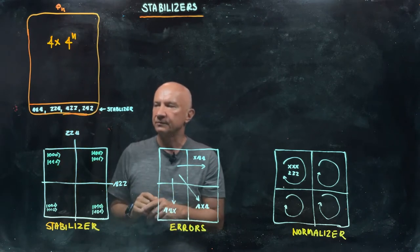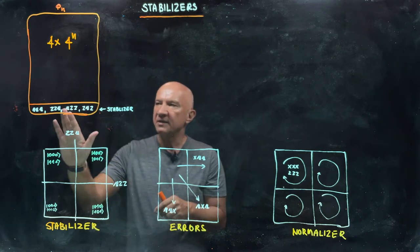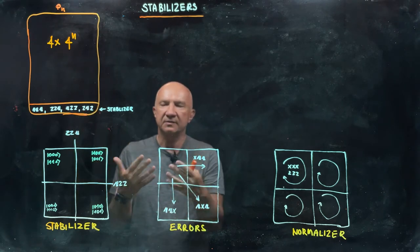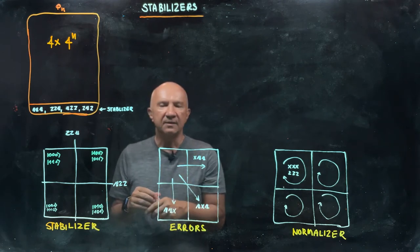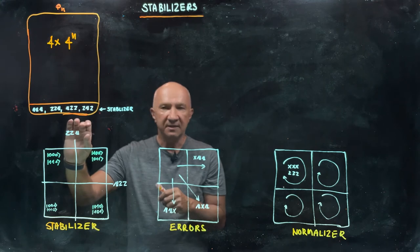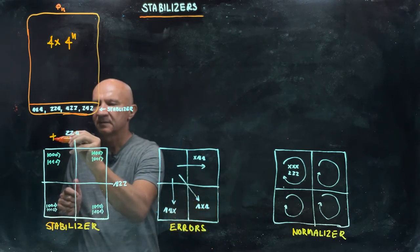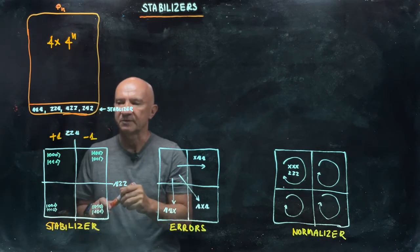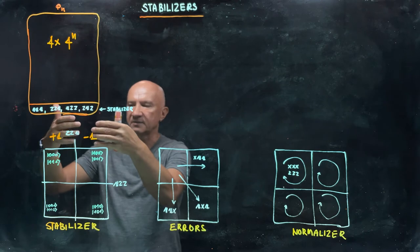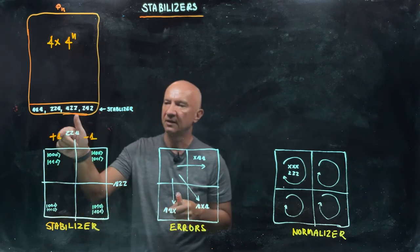If you take Z⊗Z⊗I and think about it as an observable, you can see that this is really the measurement of the parity of the first and second qubits. If you think about this Pauli operator as your observable, it's going to bisect the Hilbert space into two subspaces. So Z⊗Z⊗I, this element of the stabilizer, is going to generate a plus-one subspace and a minus-one subspace — two eigenspaces. We divided the whole eight-dimensional Hilbert space into two four-dimensional subspaces.